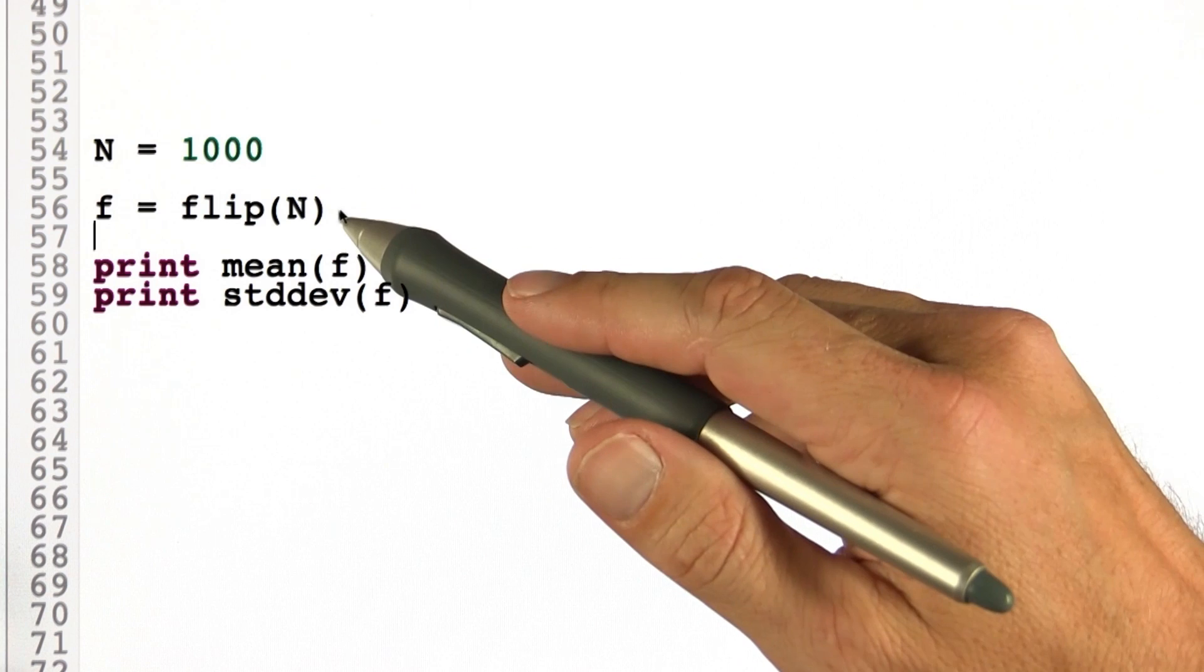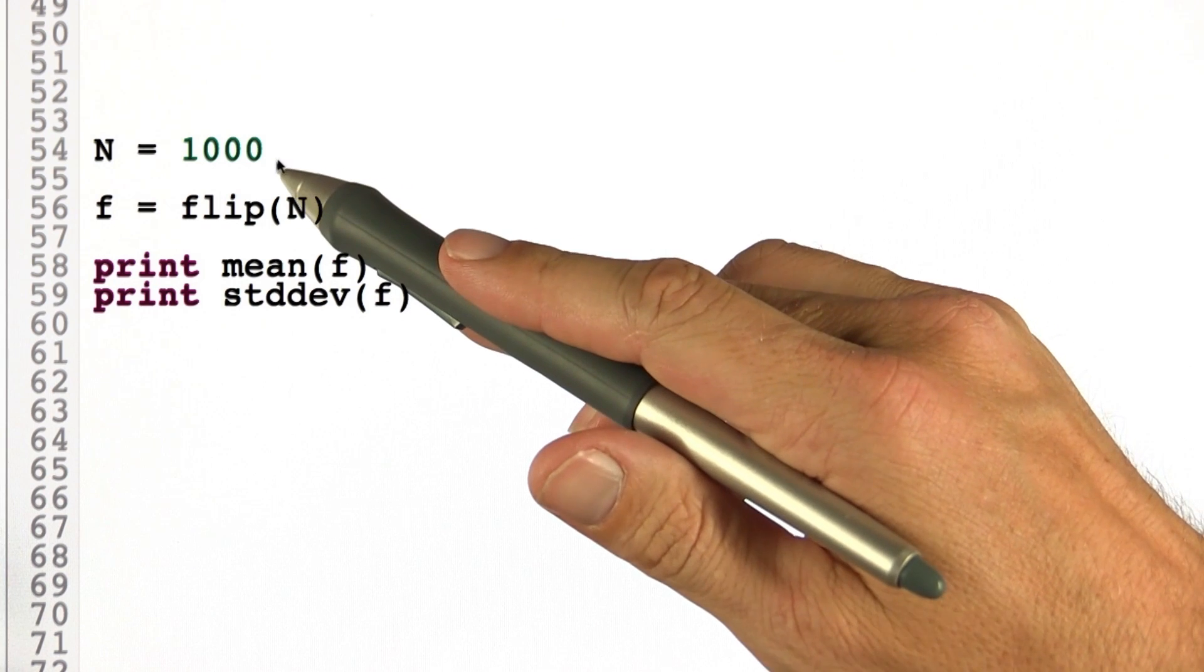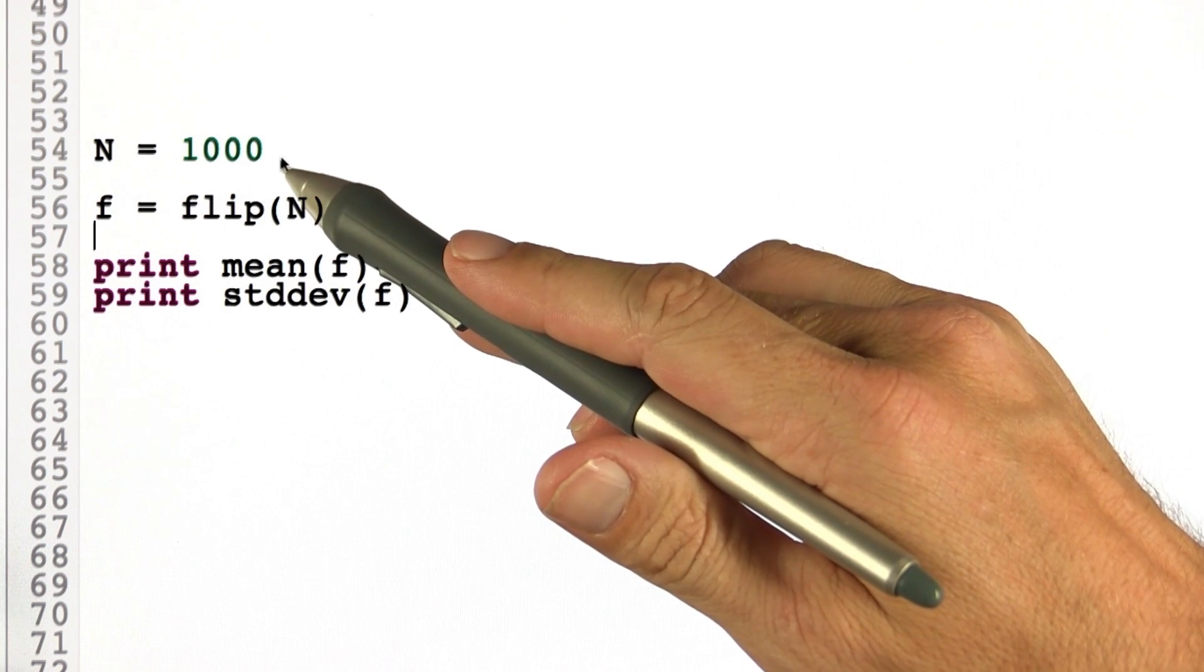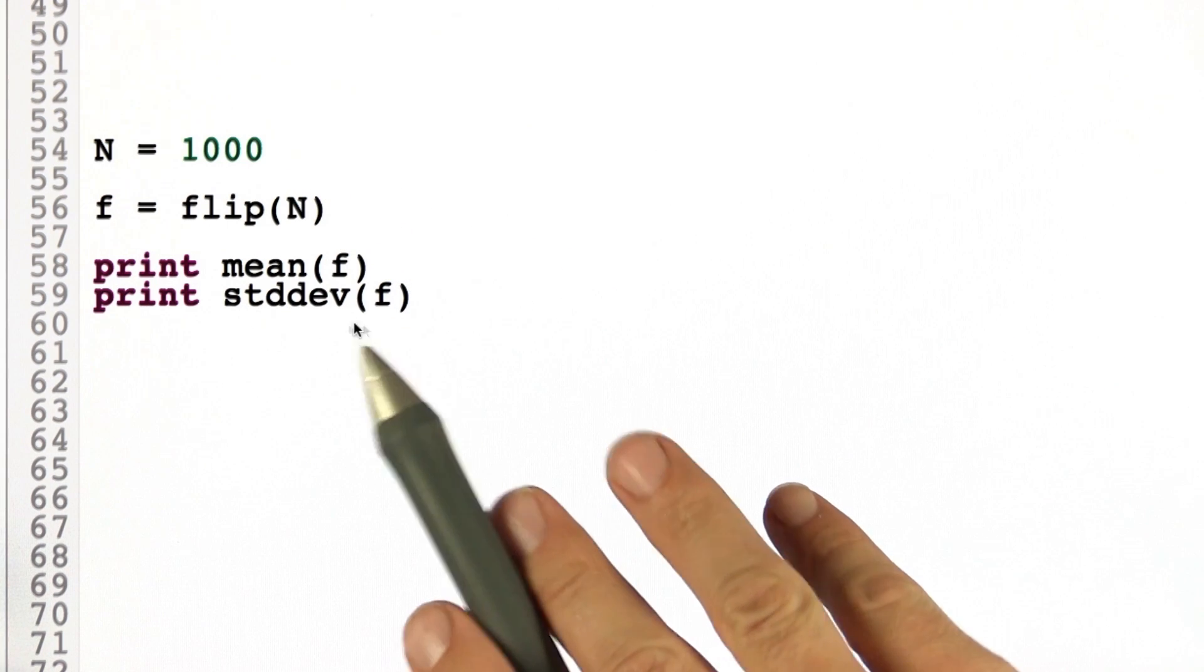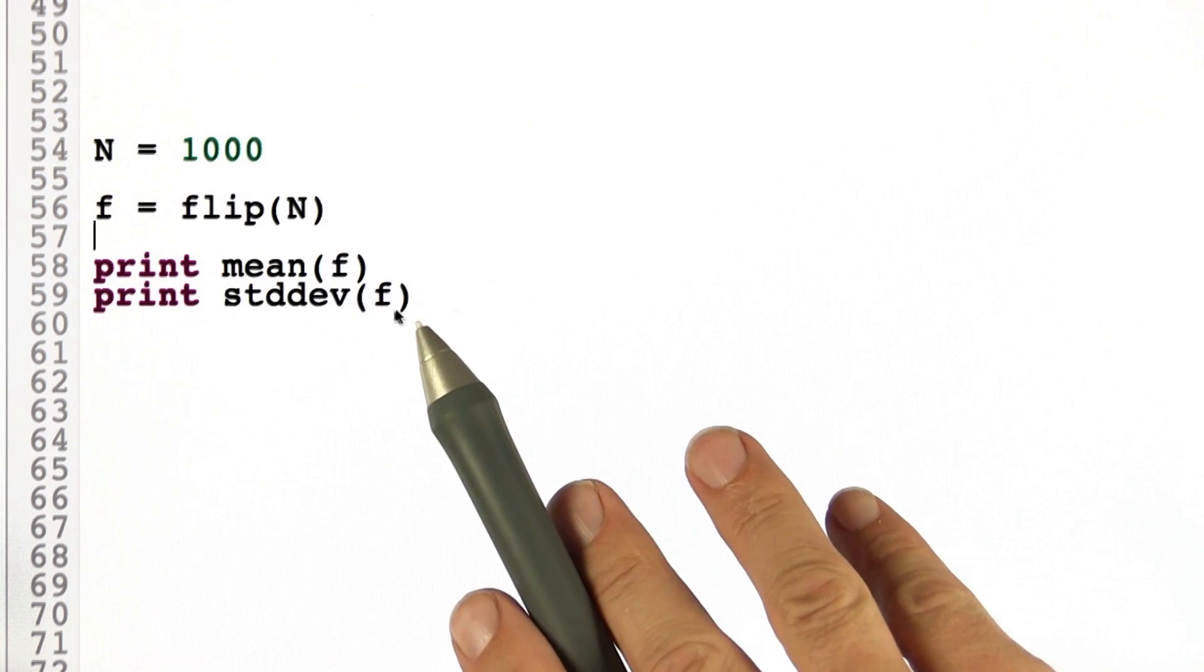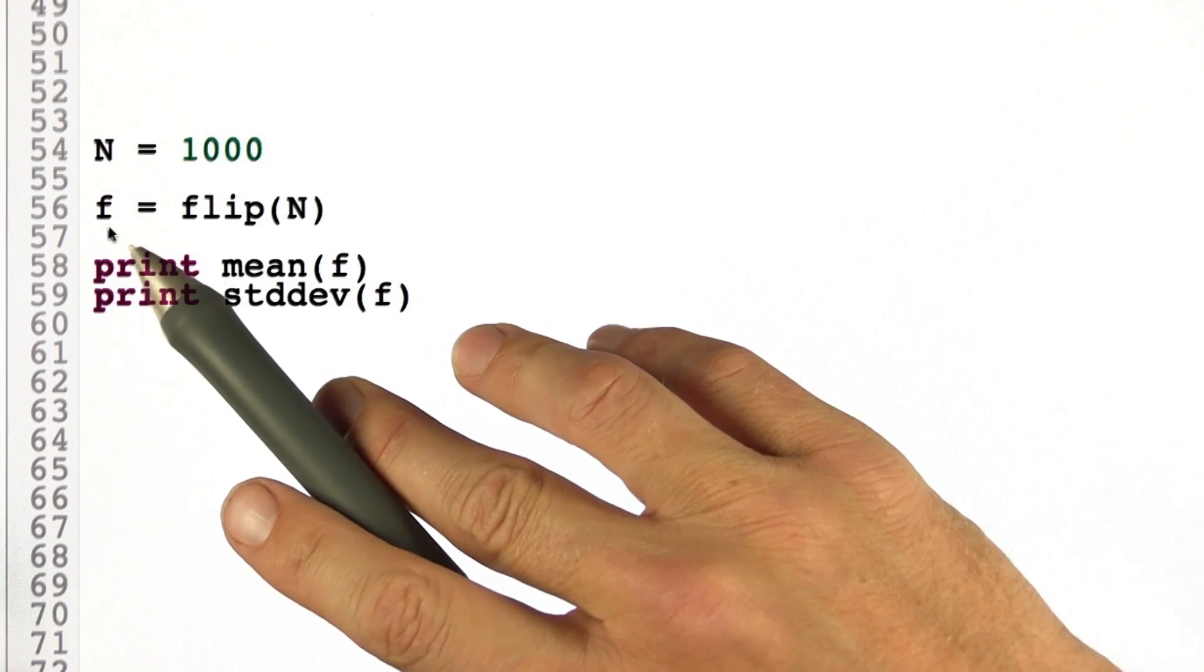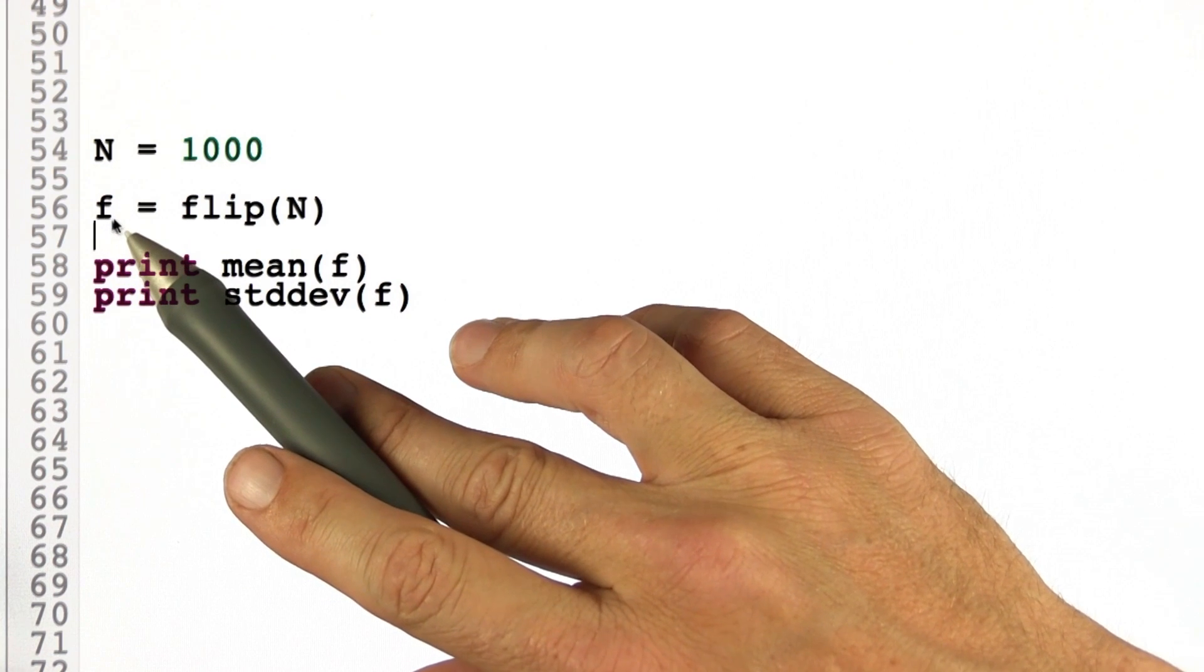I now want you to implement the function flip that takes as an argument the number of coin flips you want to do, 1,000 in this case, and then uses the function mean and standard deviation to compute the mean and standard deviation of the resulting sequence of outcomes. This will be a list filled with 0s or 1s.